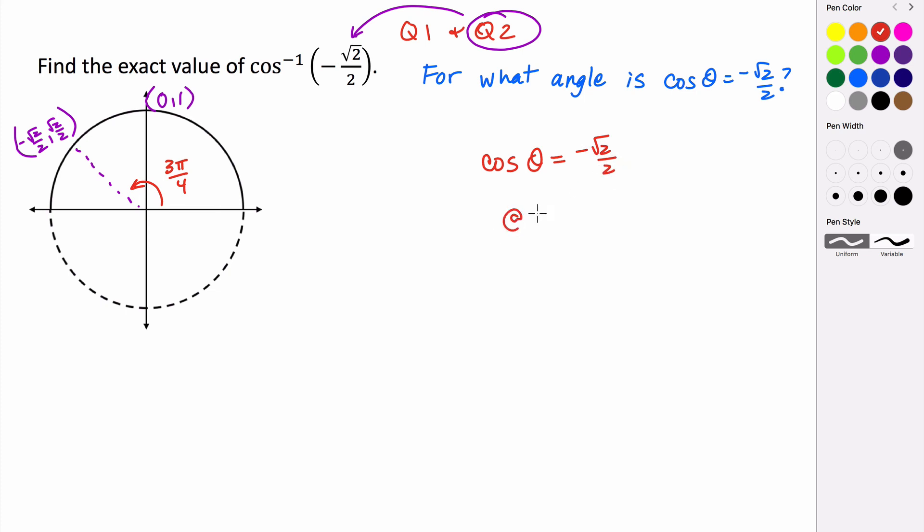when theta is equal to 3 pi over 4. So we can just say the inverse cosine of negative rad 2 over 2 equals 3 pi over 4.